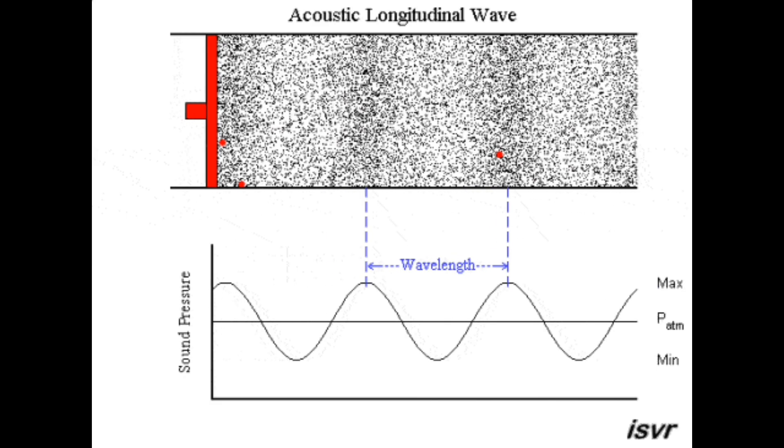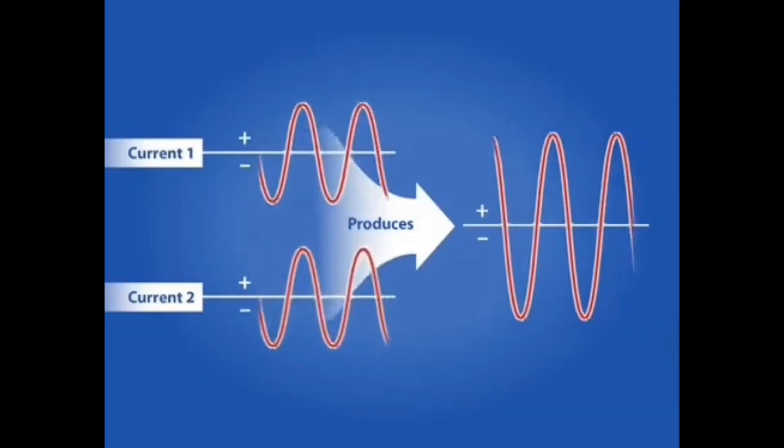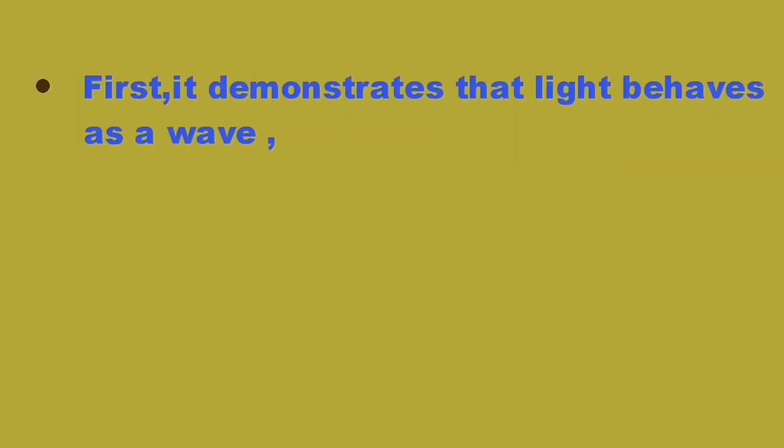So what does Young's double-slit experiment tell us about the nature of light? First, it demonstrates that light behaves as a wave.